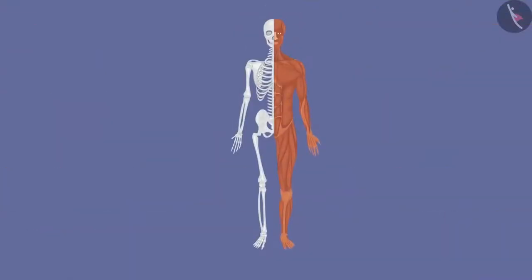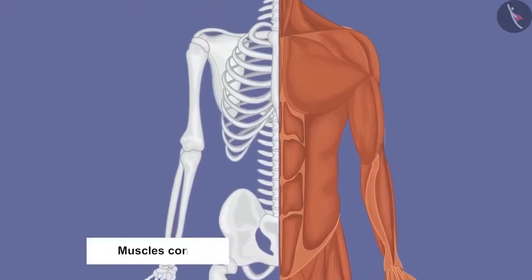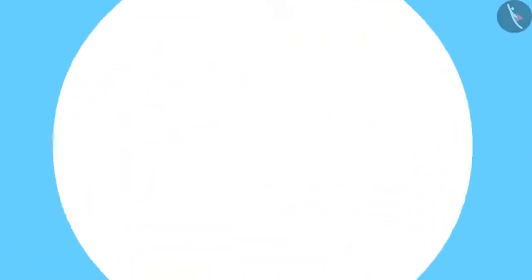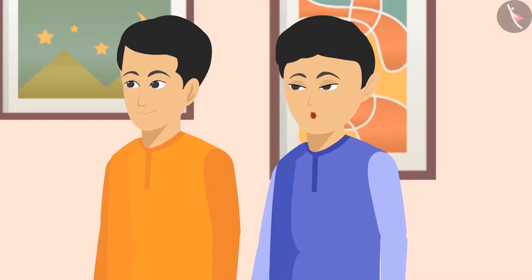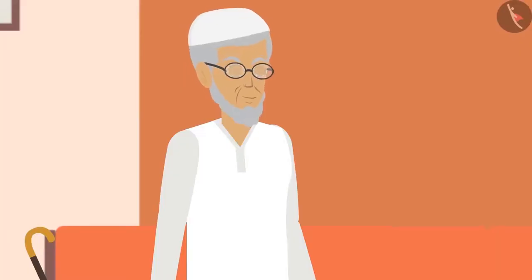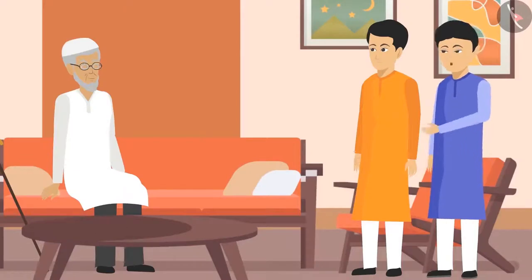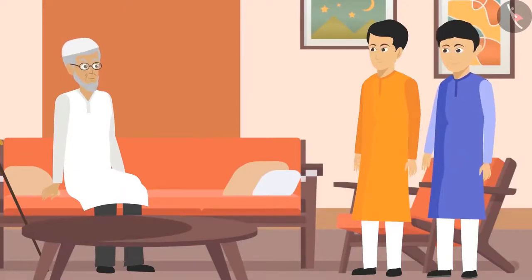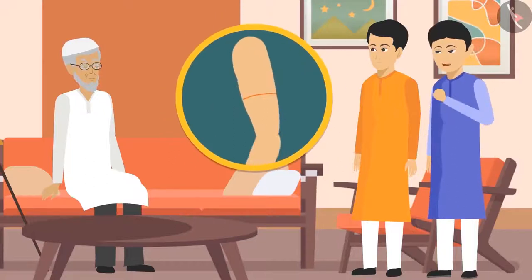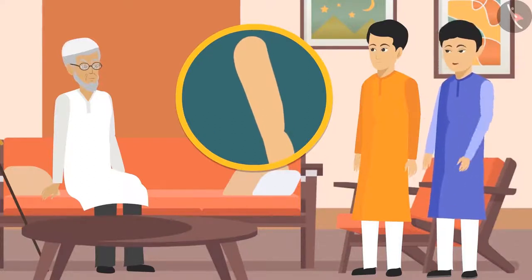'Explain it further in detail.' 'Chacha ji, as our muscles can only pull bones by contracting but cannot push them, that is why at least two muscles are needed to cause movement in a bone. For example, if I close my fist and touch my chest with it, the front muscle of my arm swells as it has contracted. And if I take my hand back, this muscle will relax and the muscle at the back of my arm will contract.'